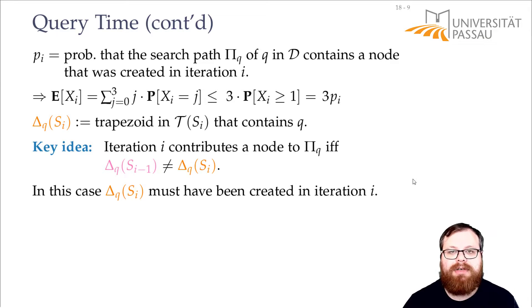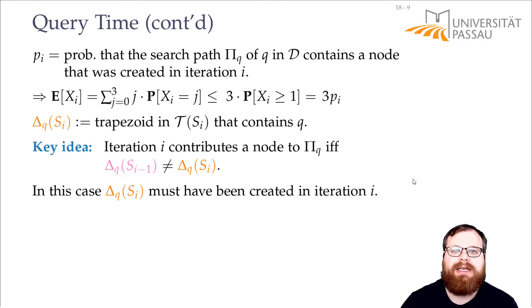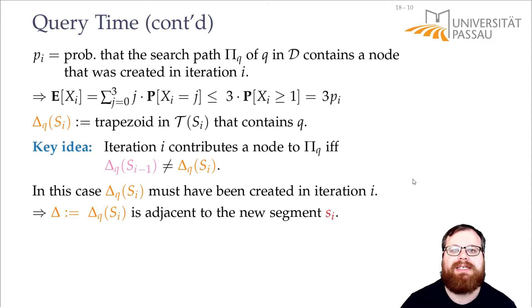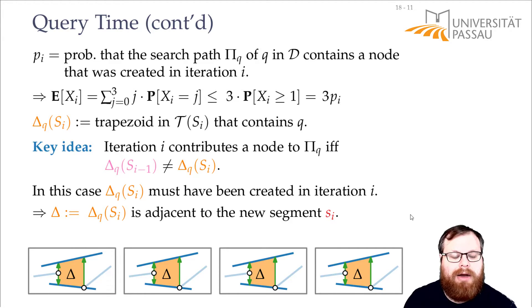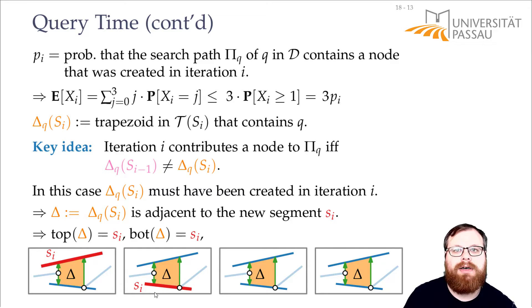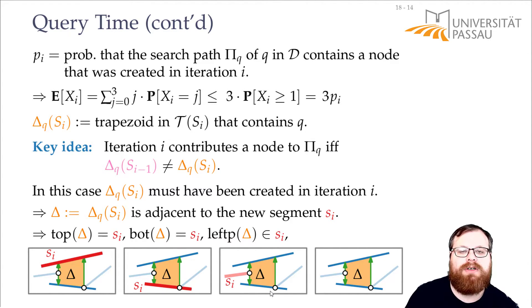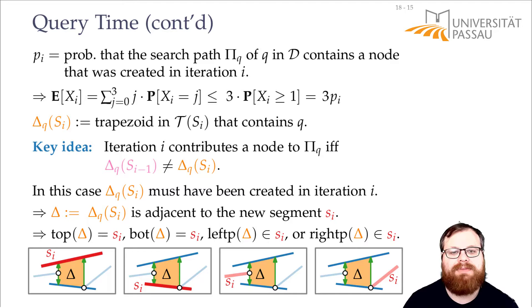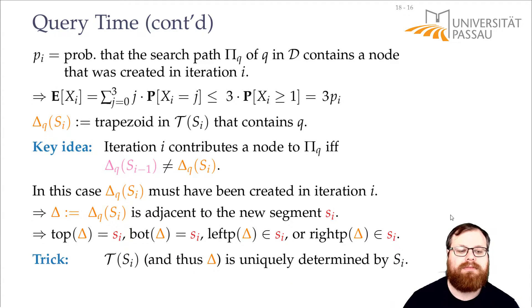So the trapezoid containing Q must have been created in iteration i. A new trapezoid is created only if it lies close to the newly inserted segment — specifically, it must be adjacent to it: either part of the segment forms the top or bottom side, or one of the endpoints of the segment lies on its boundary. So there are four cases for how this trapezoid can be created: part of si is the top side, part of si is the bottom side, the right endpoint of si is the left point of this trapezoid, or the left endpoint of si is the right point. For each case we need to find the probability. The data structure is uniquely determined by si, so we can assume si is fixed — this does not depend on the insertion order.